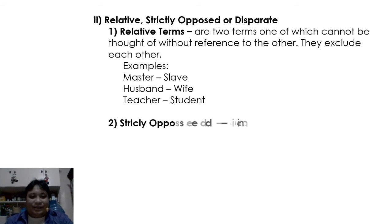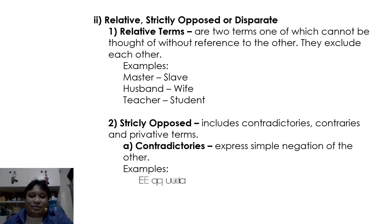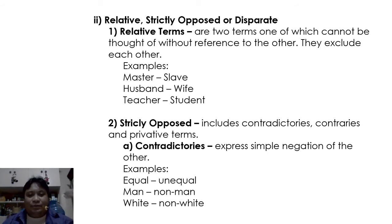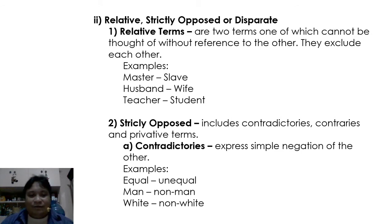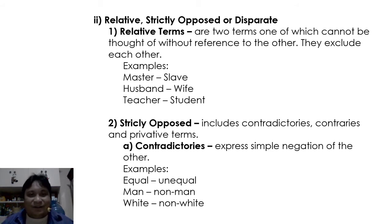Strictly opposed terms can be contradictories, contraries, or privative terms. Contradictories express a simple negation of the other, typically by adding a prefix: equal/unequal, man/non-man, white/non-white, hopeful/hopeless. These are contradictories.